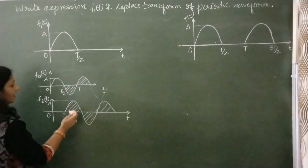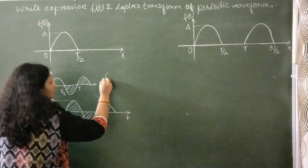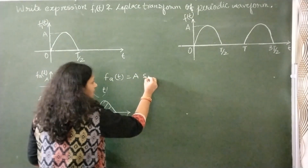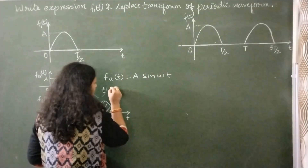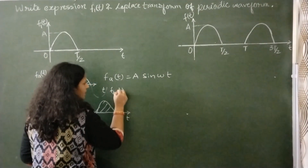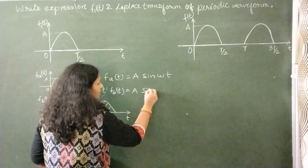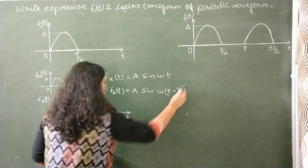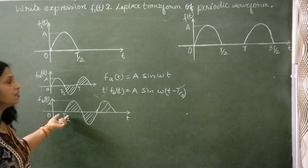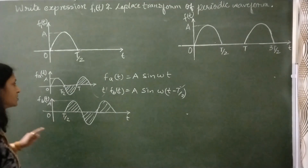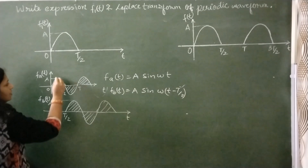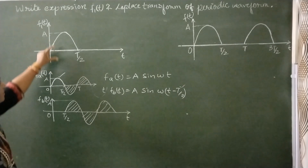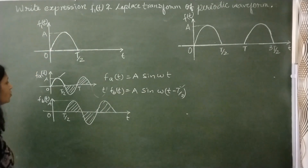When we add these two waveforms — F_A(T), which is A·sin(ωT), and F_B(T), which is A·sin(ωT − T/2), because it is starting at T/2 and has a time shift — we will get only the half sine wave component which is present in our question.